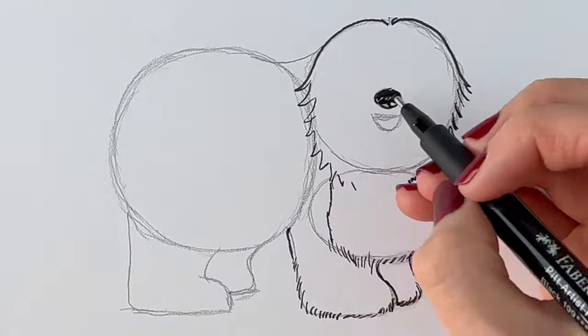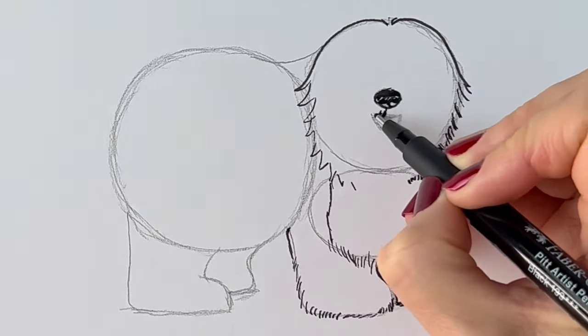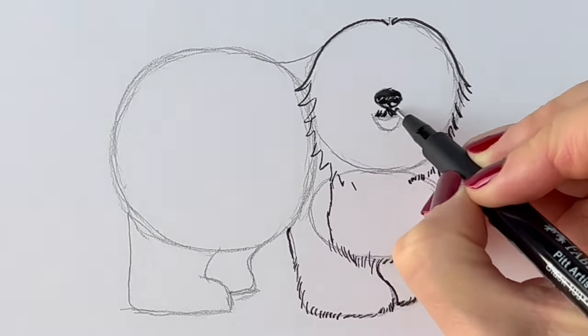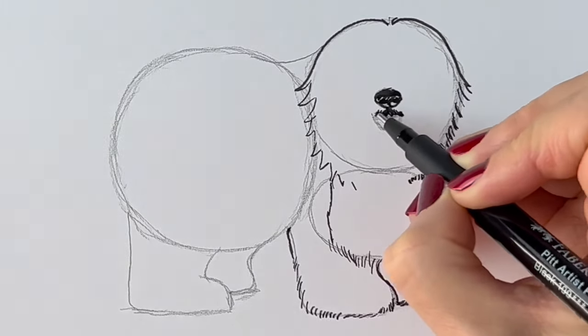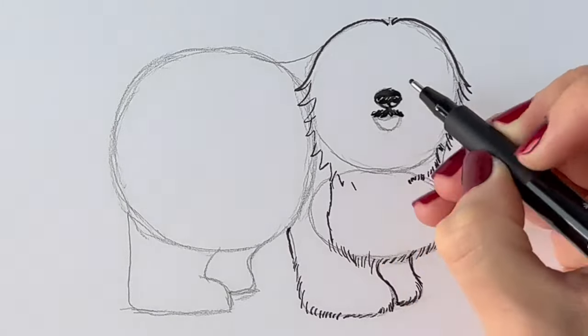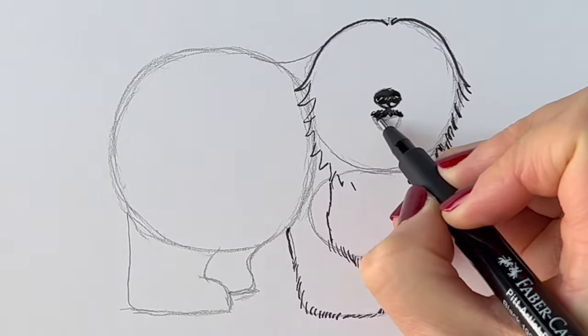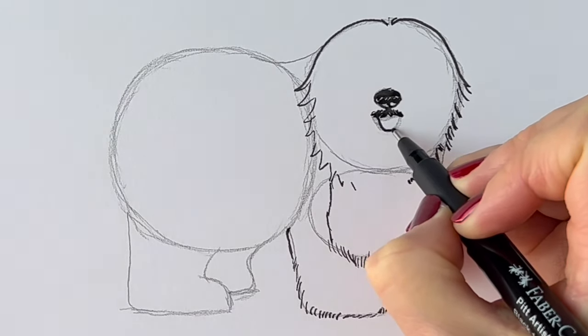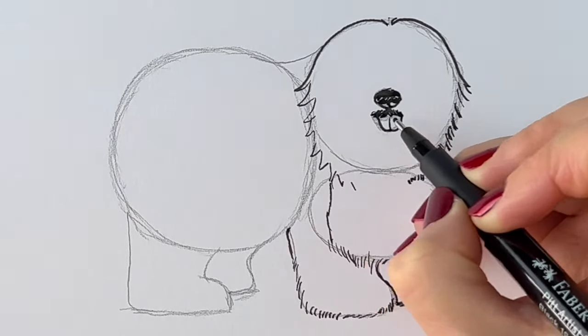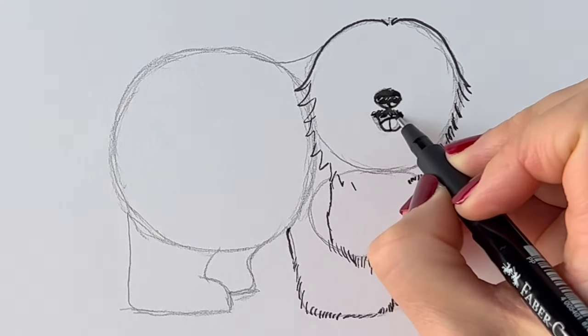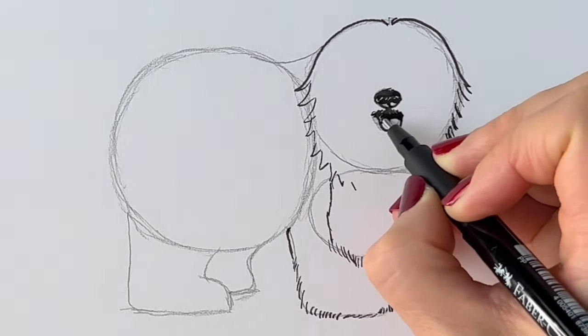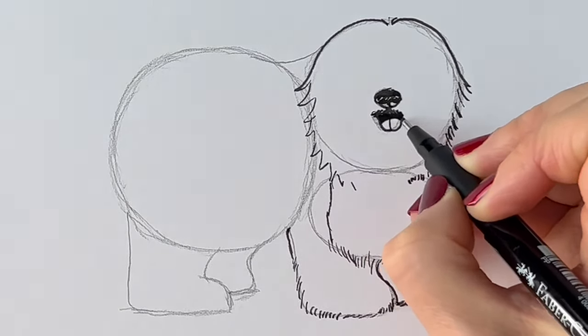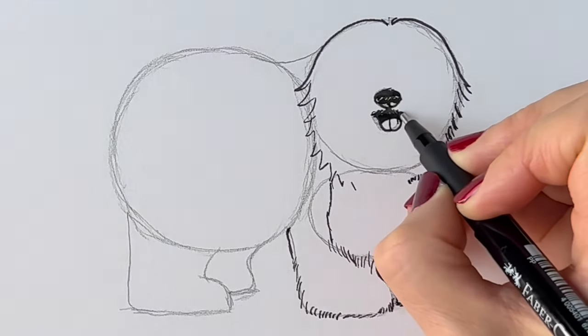And then for the lip. Top lip. Just like this. It has like a little moustache. And then the little tongue that's sticking out. Like this. And then part of the tongue is in darkness. So I'm going to colour it in. Just like so. There we go.